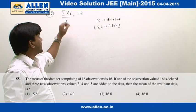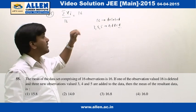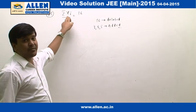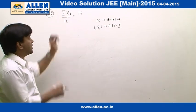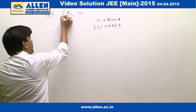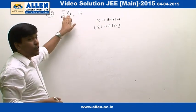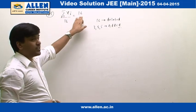In question number 55, it is given there are 16 observations and their mean is 16. We can assume those observations as x1, x2, x3 till x16, where i varies from 1 to 16. This is the mean of 16 observations, so the sum of all the observations is going to be 16 times 16, that is 256.